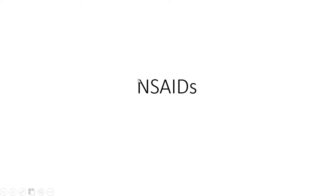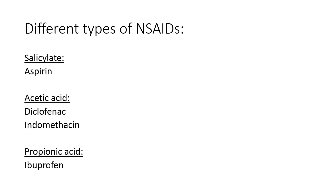This video lecture will be looking at non-steroidal anti-inflammatory drugs, or NSAIDs, a really important class of drugs that many of you have probably taken before. There are many different types of NSAIDs that can be classified according to their structure. For the salicylates, aspirin is the primary example. For acetic acid derivatives, we have diclofenac and indomethacin. And for propionic acid derivatives, we have ibuprofen.